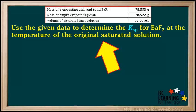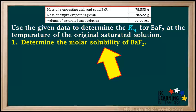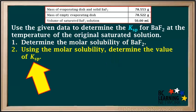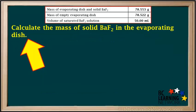We are asked to use the given data to determine the Ksp for BaF₂ at the temperature of the original saturated solution. We can do this in two major steps. First, we use the given data to determine the molar solubility of BaF₂. Once we have the molar solubility, we can use it to determine the value of Ksp for barium fluoride.